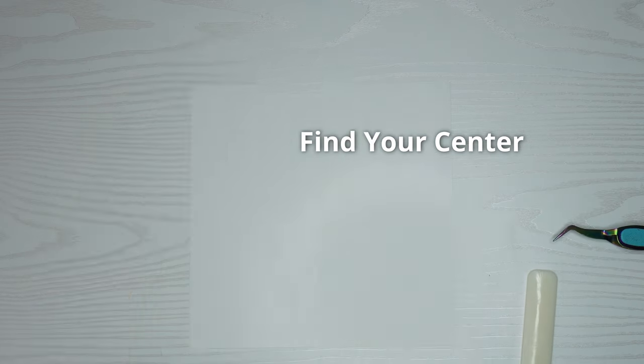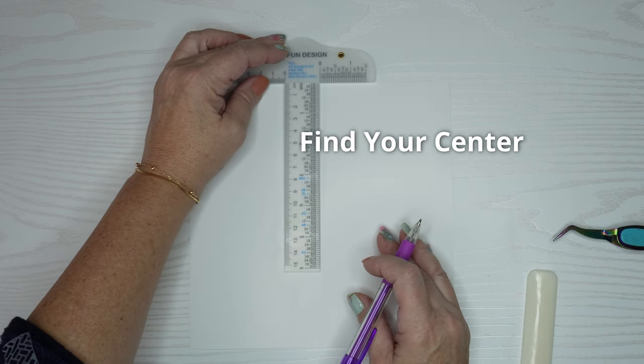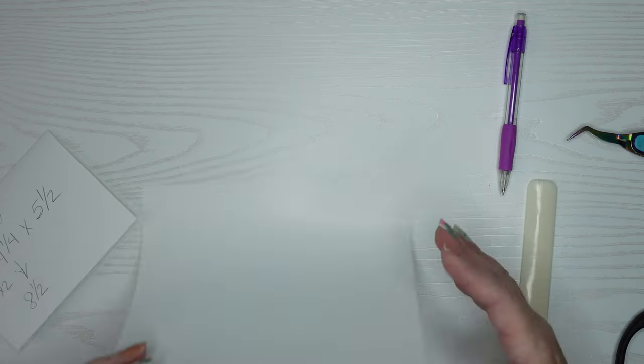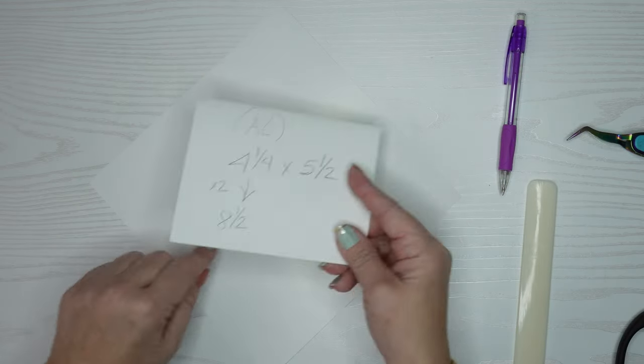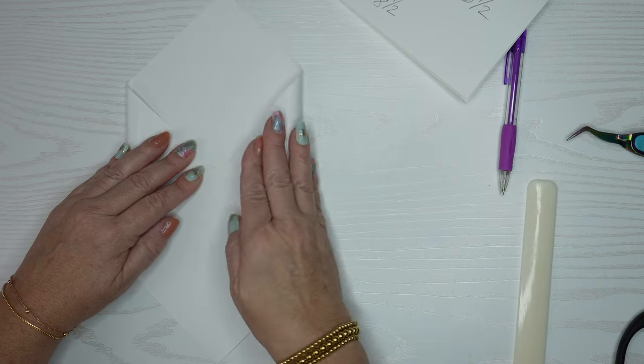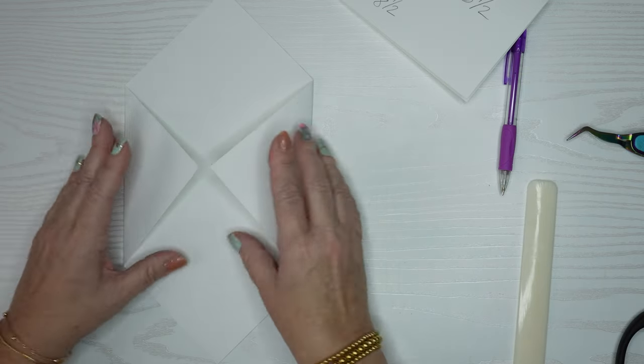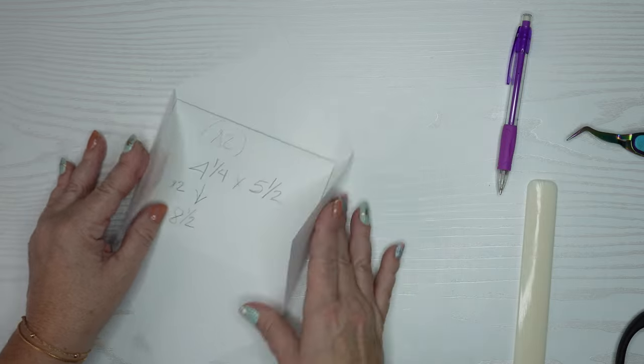You're going to want to find your center. You can do this a couple ways. You can use a measuring tool to measure out four and a quarter, four and a quarter, and then find the center. You can also just bend it, each of the corners in. I'm double checking that my math worked because I always do because sometimes I have a brain fart and I do it wrong.